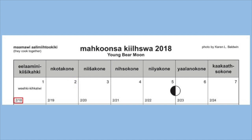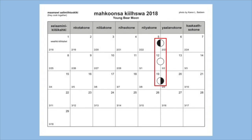Looking in the lower left corner of each square, you will see two numbers separated by a slash — in this case, 2/18. These numbers indicate the corresponding date on the Gregorian calendar in month/day format. This means that the first day of Makunza Kilsua 2018 is February 18th. The dual date system allows you to not only track the progress of seasons in a Myaamia way, but also important dates like you would on a typical Gregorian calendar.